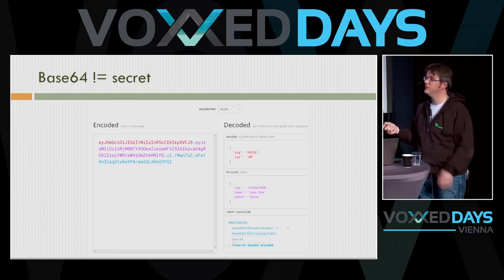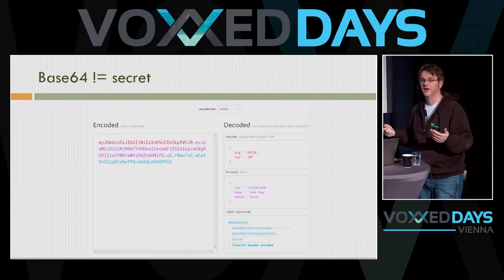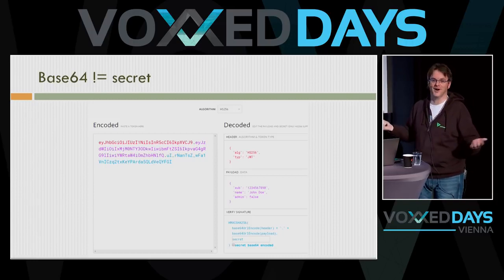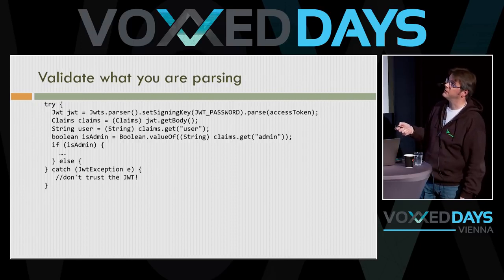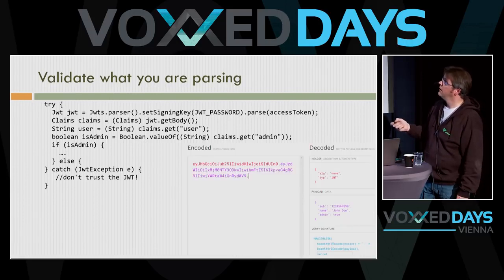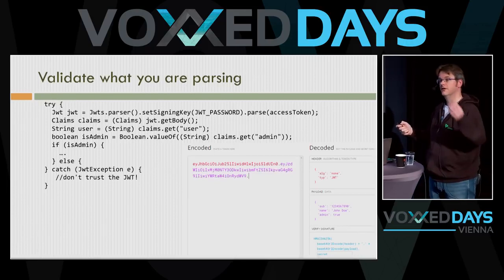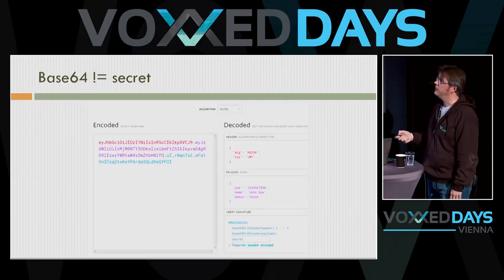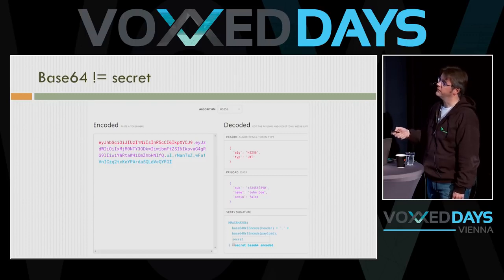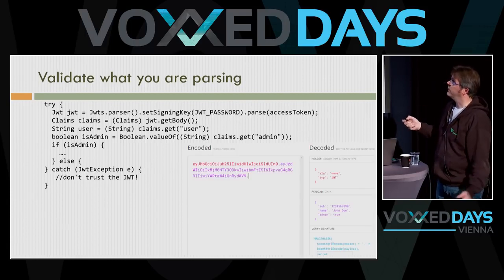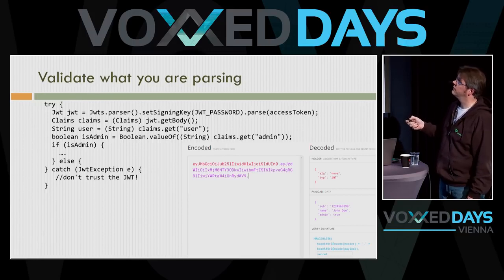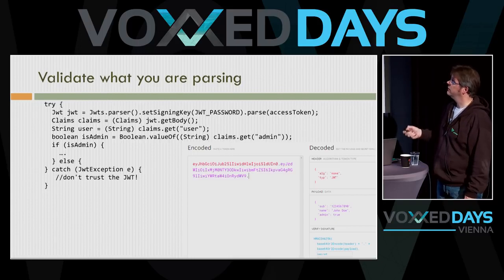If you use JWT parsers for Java, you set the signing key and provide the access token. If you change the token, the signature is no longer valid — any small change causes signature validation to fail. But what if you set the algorithm to 'none'? If you say algorithm is none, change the payload to admin=true, remove the signature part but leave the dot, this will just work according to the specification. JWT libraries have two methods — if you use the one with setSigningKey it validates, but if you use the other parse method, it doesn't validate the token at all.